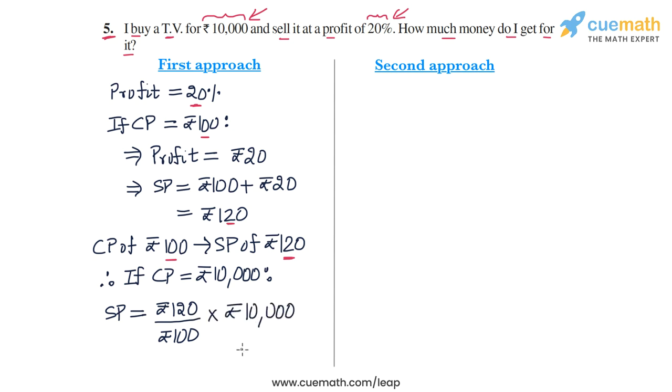Okay, and now we simply calculate this product, this expression. So we cancel out the zeros and we get 120 into 100. And 120 into 100 will be Rs. 12,000. Okay, so the selling price is Rs. 12,000.